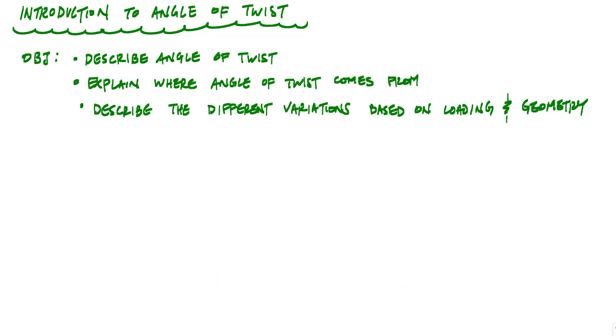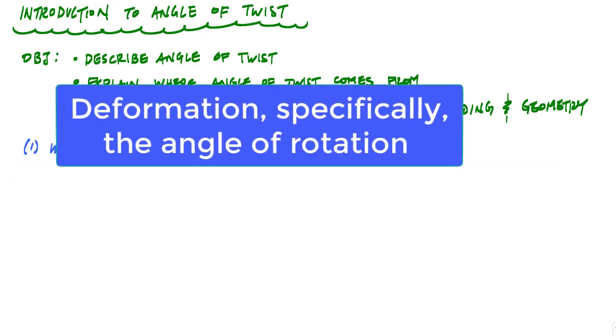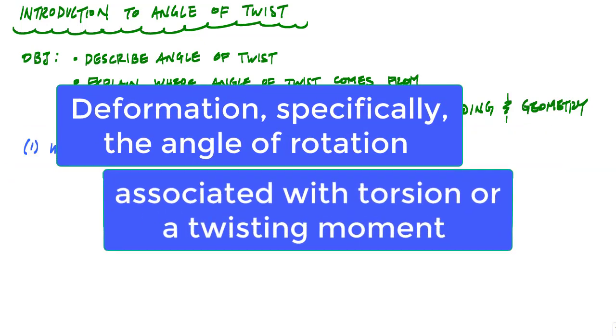And what we're gonna do is describe the angle of twist, what it is, and then explain where the angle of twist formula comes from and go through a description of how you might use the variations of the angle of twist formula based on loading and geometry. The angle of twist is a deformation, specifically the angle of rotation associated with torsion or a twisting moment.